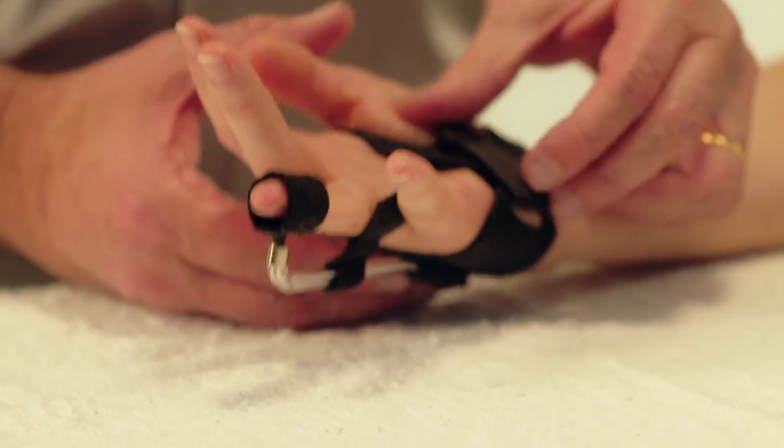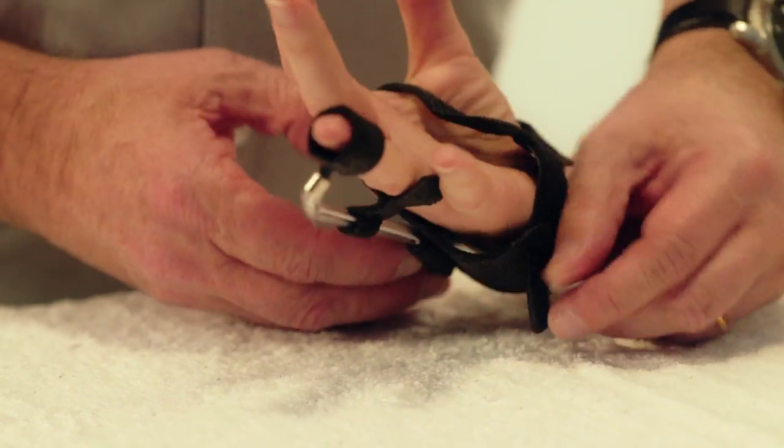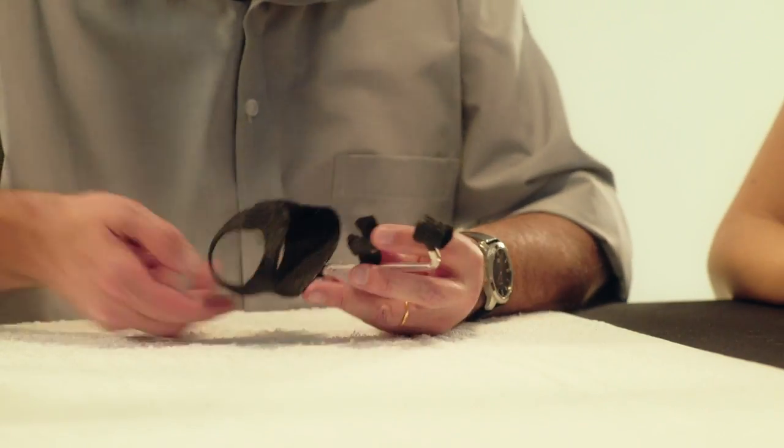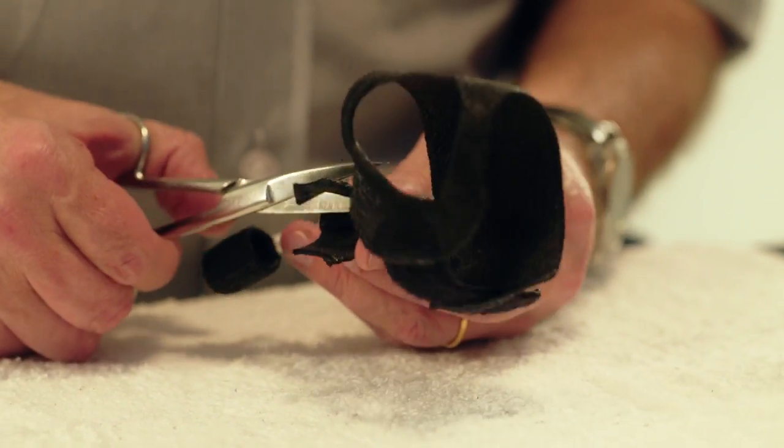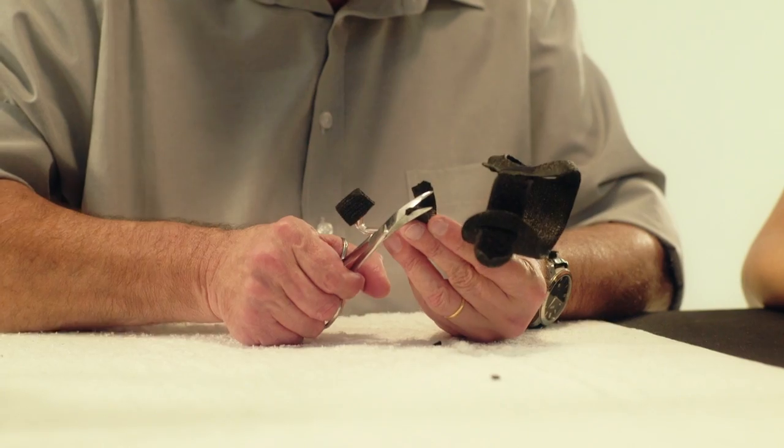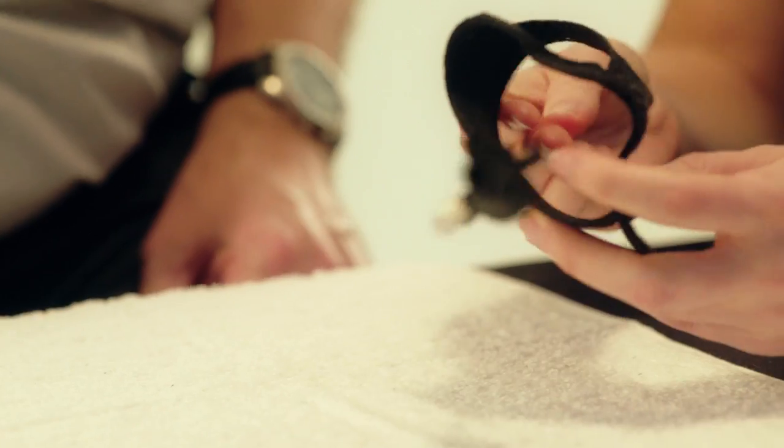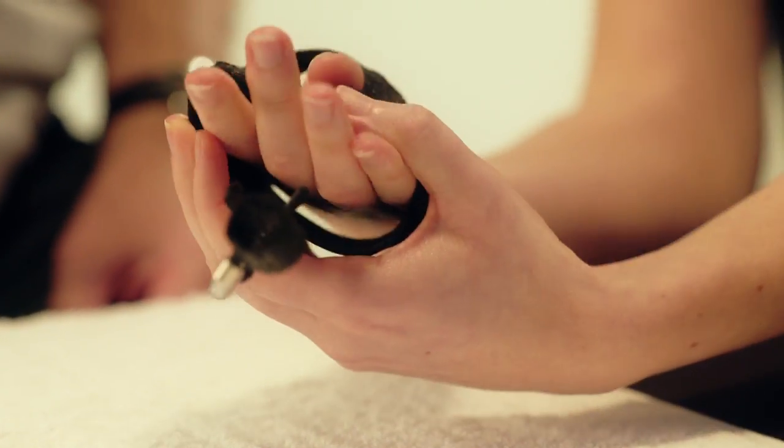Take the orthosis off. Round the edges on both sides of the MCP stop. The orthosis can then be tried on again.